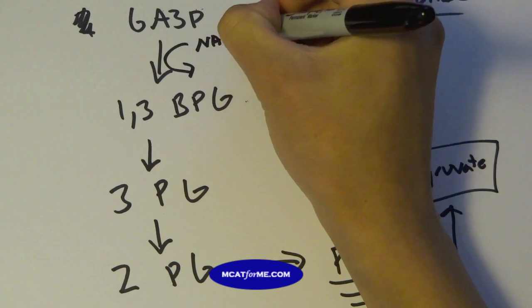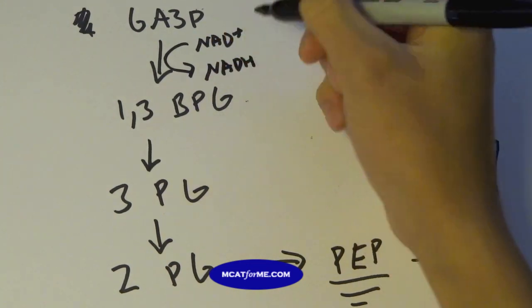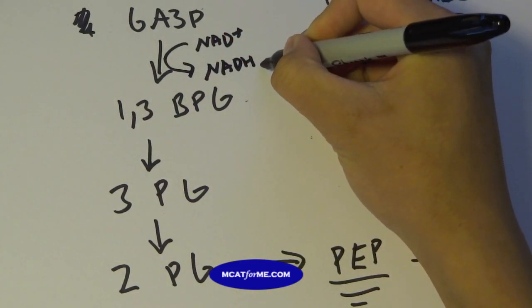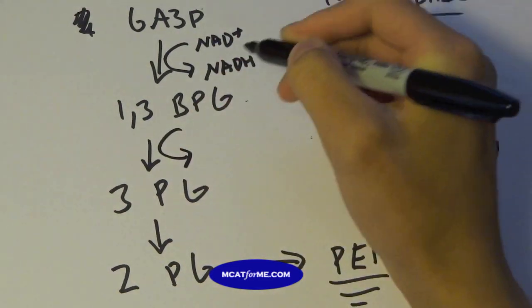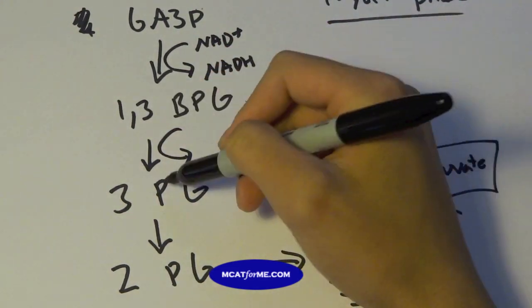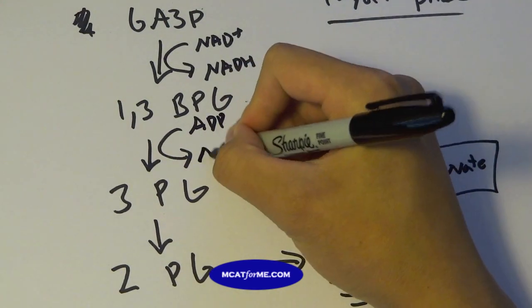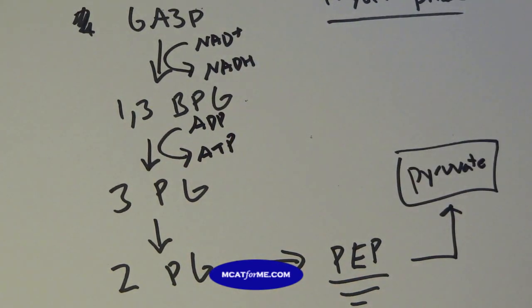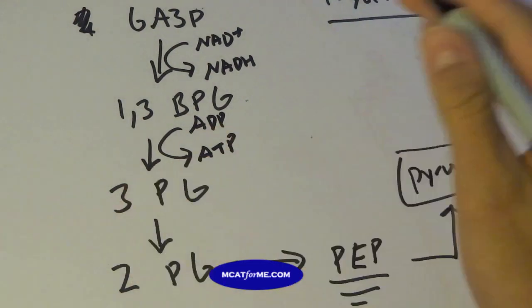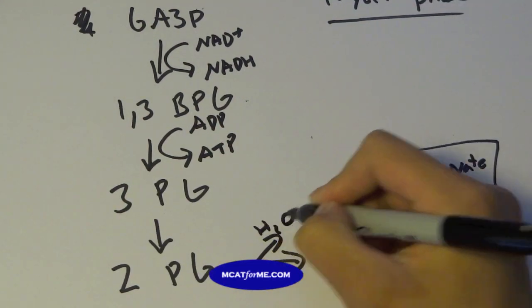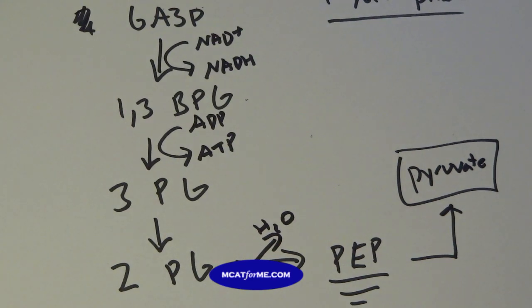So right here, we form NADH, so this is one of our goals of glycolysis. And right here, if you could guess, we went from two phosphates down to one. So where do you think that extra phosphate went? Well, if you guessed this, you guessed it right, ADP is converted to ATP. And that's really it. There's also water that comes out when we convert it to PEP.